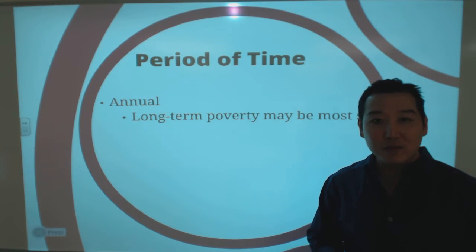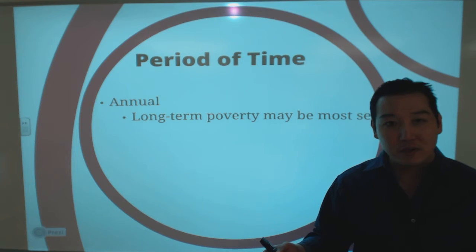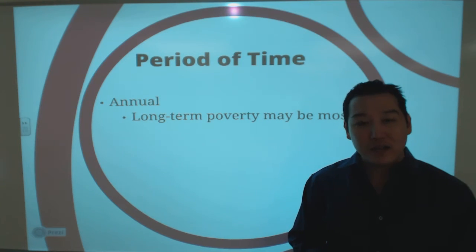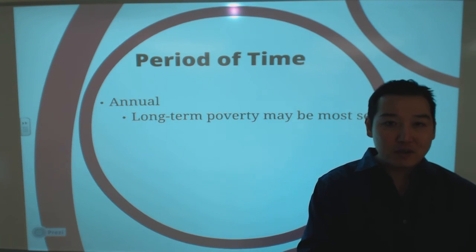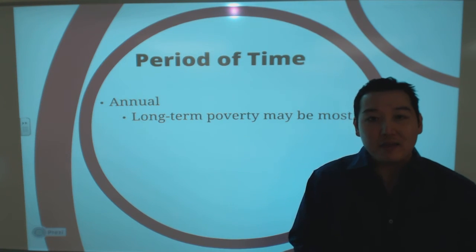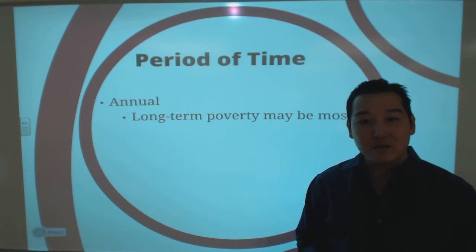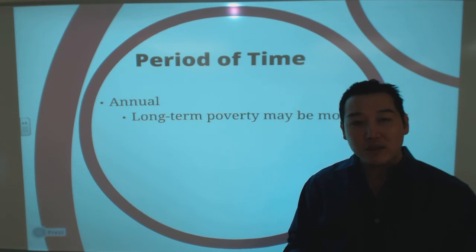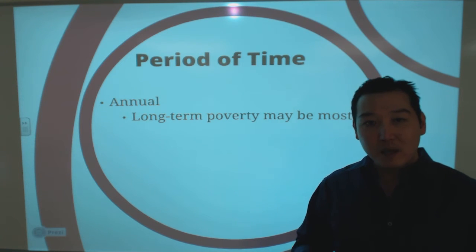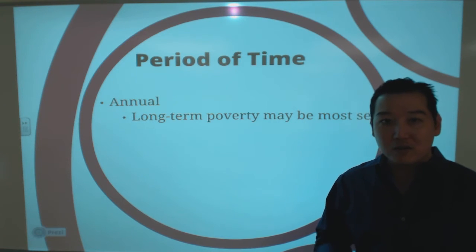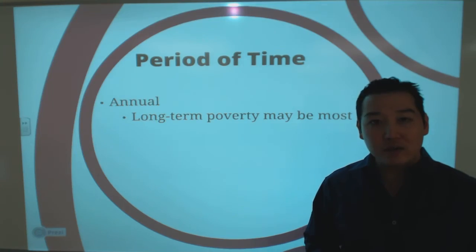Finally, the Census Bureau looks at poverty on an annual basis. They collect data through the Current Population Survey from March through summer of a given year, crunch the numbers, and release the results each September. The most recent data available was released in September 2013, covering 2012 data. Poverty is reported annually, not monthly or on a long-term basis, though long-term poverty is a significant concern.